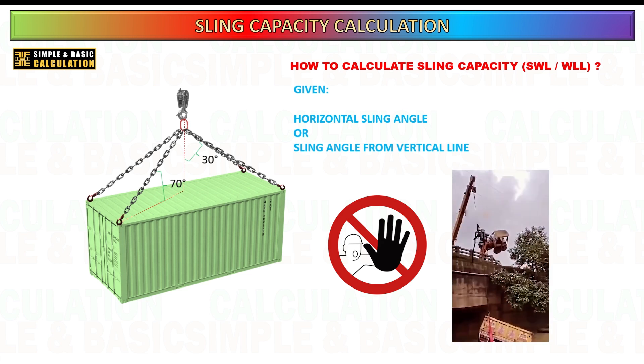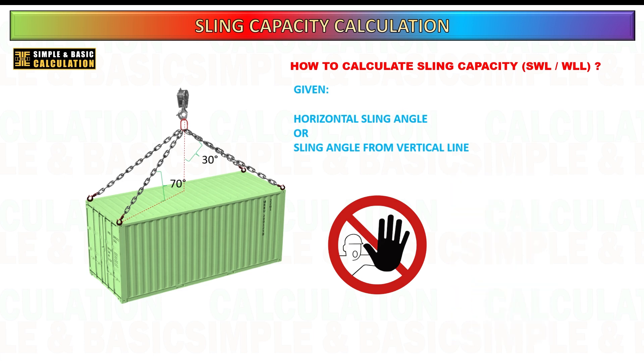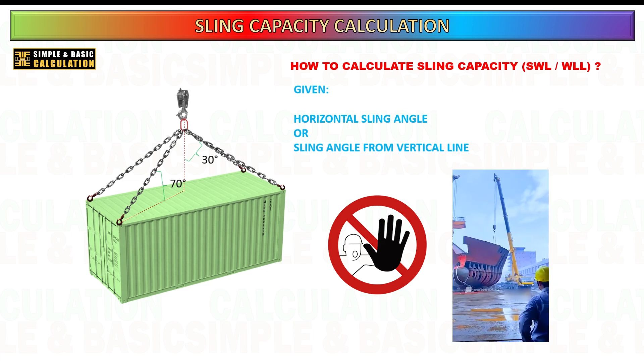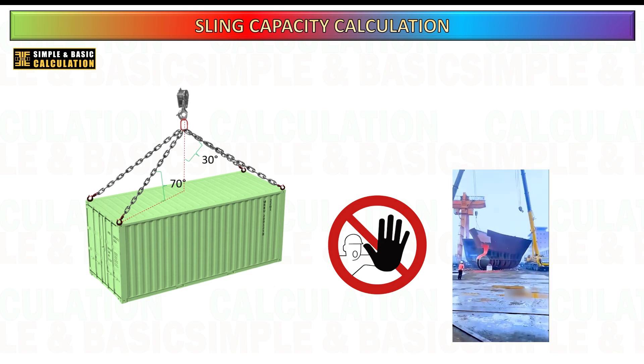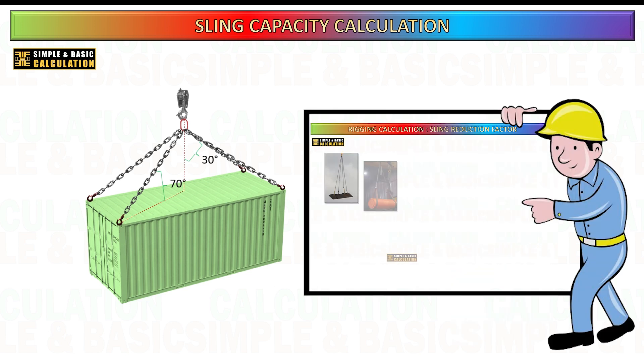The reduction factor adjusts the sling's rated capacity to account for the angle at which the sling is positioned, ensuring that lifting operations are performed safely and within the sling's limits. In a previous video, I addressed the calculation of the sling capacity reduction factor, but approached the topic from a different perspective.